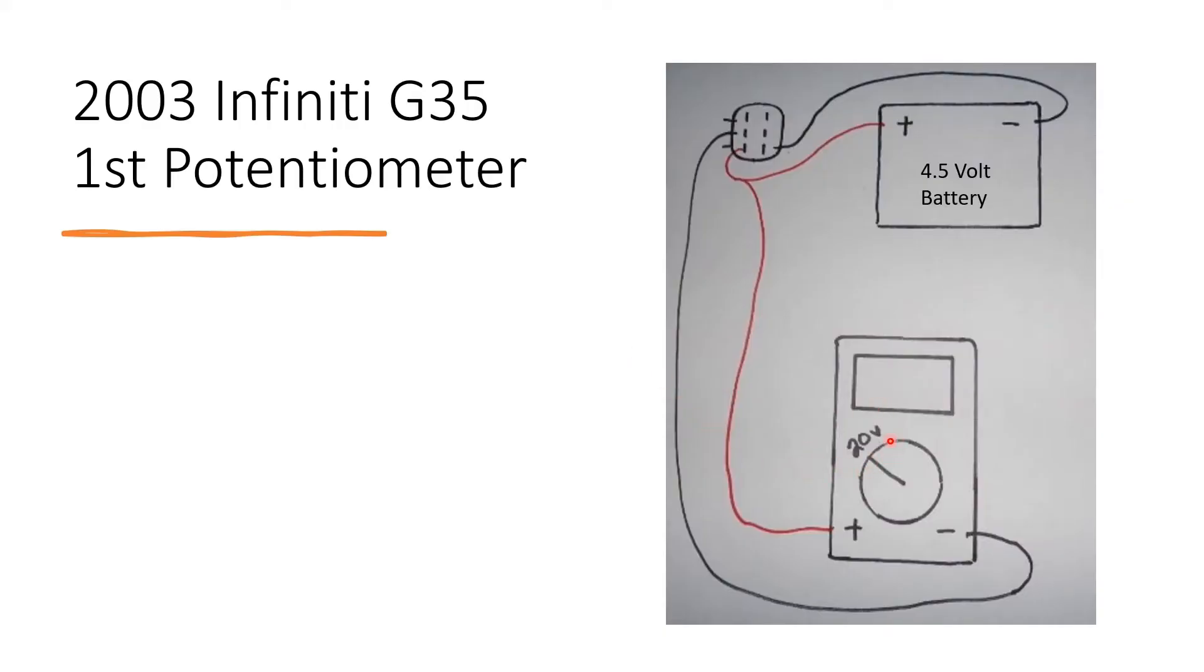The multimeter should be set to 20 volts just like this. Then the positive from the battery and the multimeter should connect up to the bottom left pin. Then the negative from the battery should connect up to the bottom right pin, and the negative from the multimeter should connect up to the middle left pin.